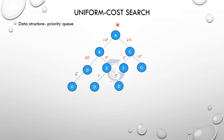Uniform cost search: if we have a weighted graph, we choose the path with the lowest cost to reach the goal. The data structure used is a priority queue, where nodes are ordered by their path cost.